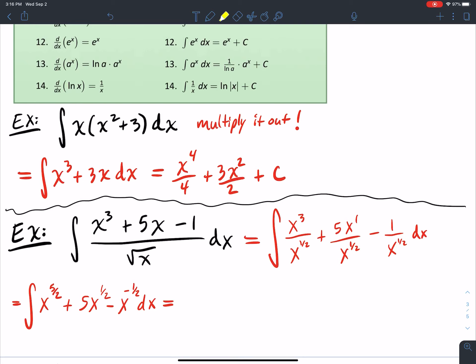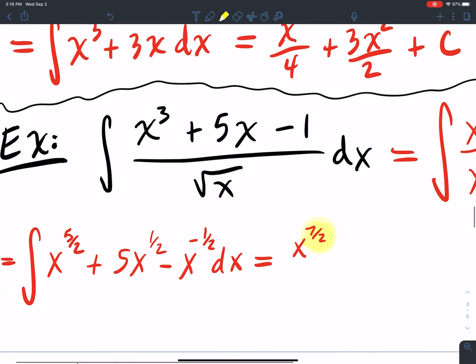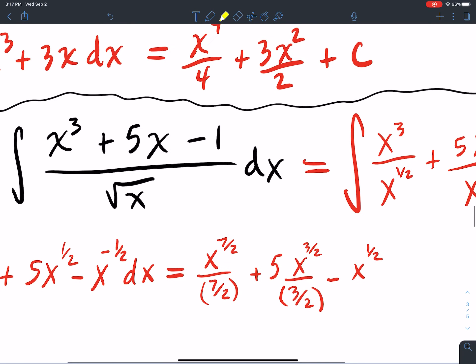Now I'm going to use the power rule for each of these. I'm going to add one to five halves. So if I add one to five halves, I get seven halves. Once I add to it, I divide by it. And then I'm going to add one to one half gets me three halves. And then I'm going to divide by three halves. And then I'm going to add one to negative a half. And that gives me a positive a half. And I'm going to divide by it. I can simplify this.